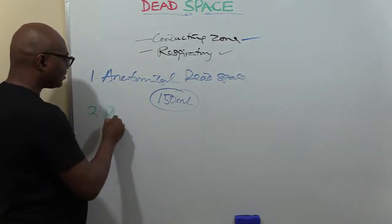You have another one called physiological dead space. Now here you need to pay attention to know the difference. Physiological dead space is this: despite the fact that from the respiratory bronchioles down they are involved in gaseous exchange, there are some alveoli that for one reason or another, there is a problem.